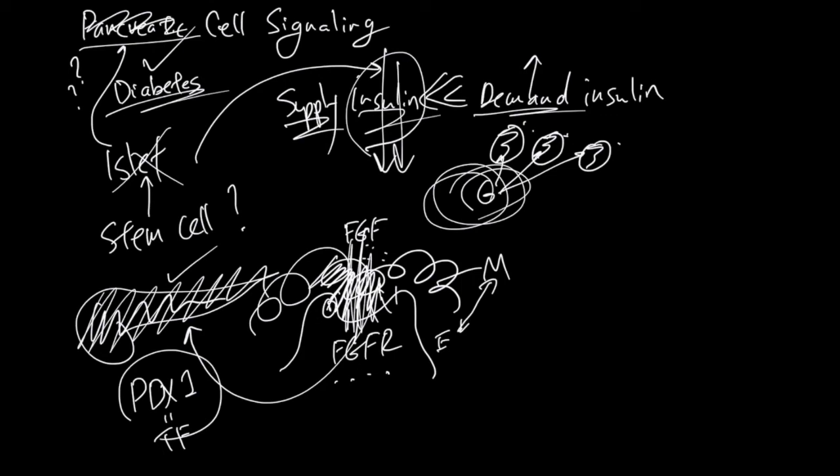Insulin is not made by the entire pancreas, right? It's made by only the islet cells. So you just have to be able to fix their islet cells. Here are some ways to do that.